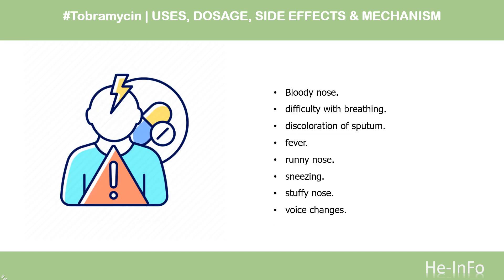Side effects of Tobramycin include: bloody nose, difficulty with breathing, discoloration of sputum, fever, runny nose, sneezing, stuffy nose, and voice changes.